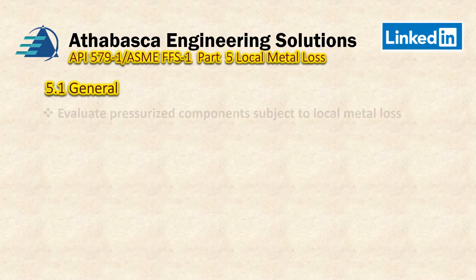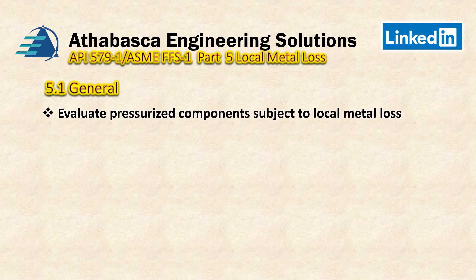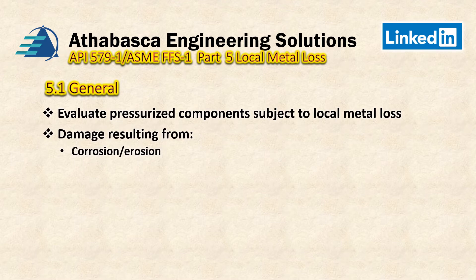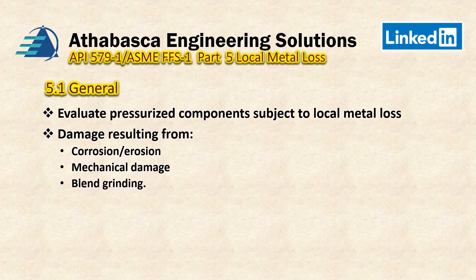Looking at General 5.1, the goal of this evaluation is to evaluate pressurized components — tanks and pressure vessels — that are subject to local metal loss. It's not applicable to structural components; it's for pressurized parts. The damage can result from corrosion, erosion, mechanical damage, or blend grinding. We want to evaluate components subject to these types of conditions and determine the level of inspection required.